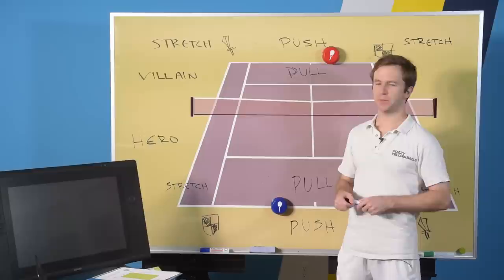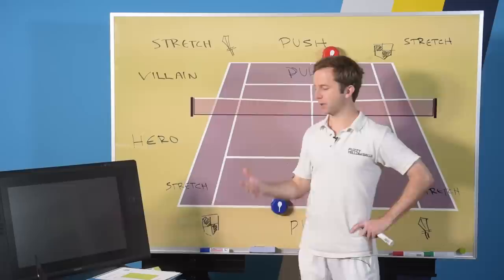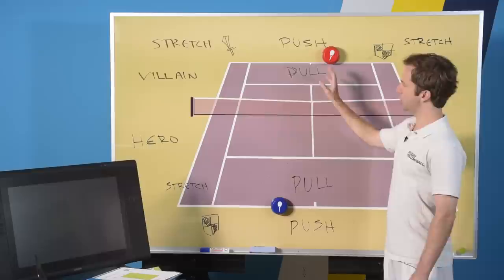I want to welcome everybody that's watching live. There's a chat box where you can interact, but we're going to keep today relatively quick. I sent out a poll a couple days ago and we've been talking about running plays and how when you're trying to affect villain's court positioning you can stretch them wide, you can push them back, you can pull them in, or you can hit behind them.